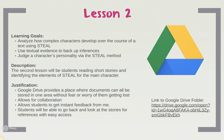Lesson two. Learning goals for lesson two are analyzing how complex characters develop over the course of a text using STEAL, use textual evidence to back up inferences, and judge a character's personality via the STEAL method. The second lesson will have students reading short stories and identifying the elements of STEAL for the main character. All of the stories would be on Google Drive for students to access. We would start by reading, analyzing, and annotating 'The Contents of the Dead Man's Pocket' together using STEAL. After the first story, students will work in small groups and do the same thing with two other stories. Students will need to make copies of the stories and invite each group member so they can all work on it together.